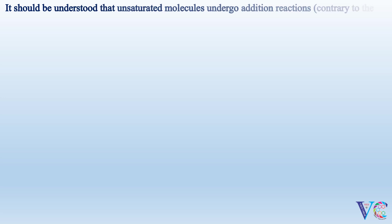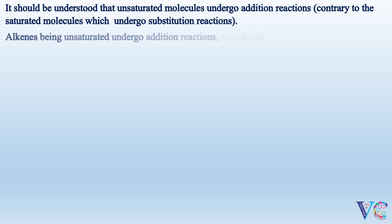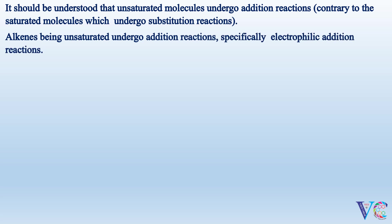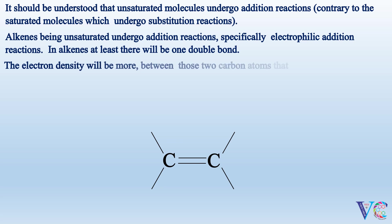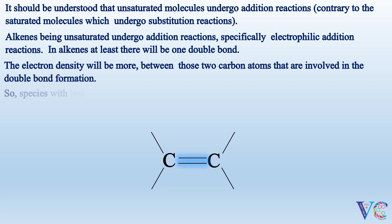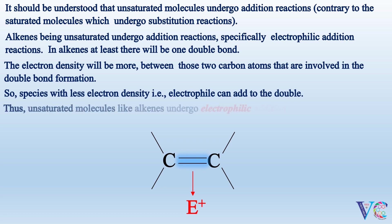It should be understood that unsaturated molecules undergo addition reactions, contrary to saturated molecules which undergo substitution reactions. Alkenes, being unsaturated, undergo addition reactions — specifically, electrophilic addition reactions. In alkenes, there will be at least one double bond. The electron density will be greater between the two carbon atoms involved in the double bond. So the species with less electron density, that is the electrophile, can add to the double bond. Thus, unsaturated molecules like alkenes undergo electrophilic addition reactions.